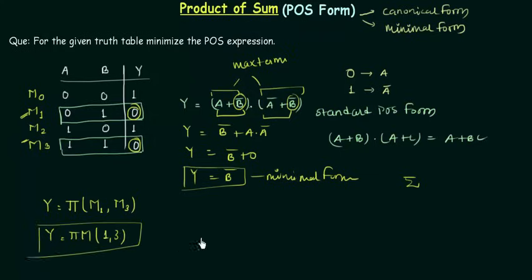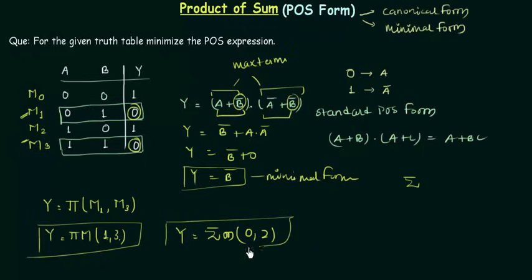If this is the information you can definitely get the information about the min terms and you have y equals to summation small m. What is there in the bracket? 1, 3. So what is left? 0, 2. So 0, 2 is the min terms for which the value of y is 1. So you have to just write the numbers that are not in the max term and that will be our min term. So this is how you can find out the max term and min term from the truth table.